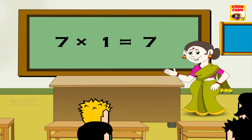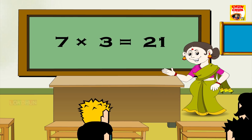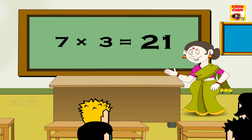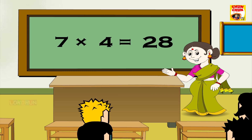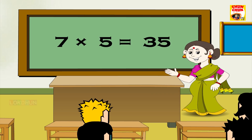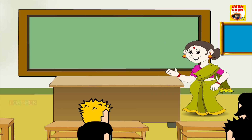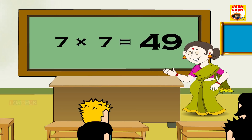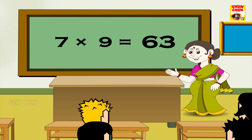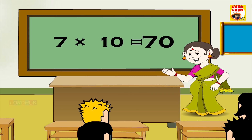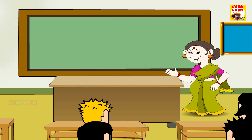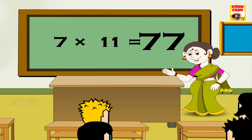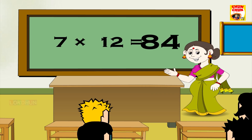7 1s are 7, 7 2s are 14, 7 3s are 21, 7 4s are 28, 7 5s are 35, 7 6s are 42, 7 7s are 49, 7 8s are 56, 7 9s are 63, 7 10s are 70, 7 11s are 77 and 7 12s are 84.